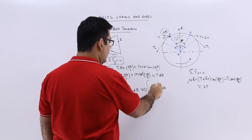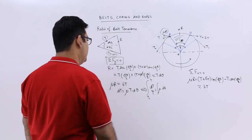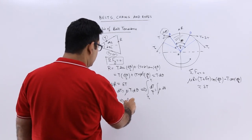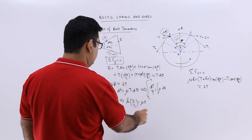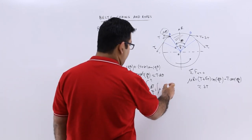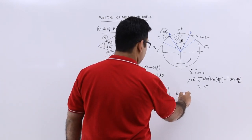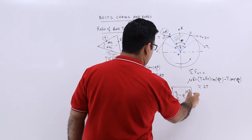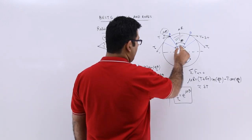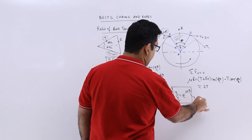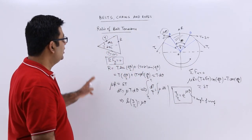For the entire pulley, we integrate from T2 to T1, which gives log(T1/T2) = μθ. The commonly known result is T1/T2 = e^(μθ), where μ is the coefficient of friction between the belt and the pulley, and θ is the angle of wrap. This is how you determine the ratio of belt tensions.